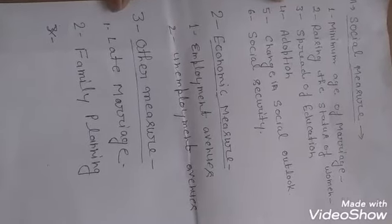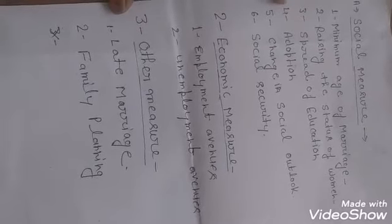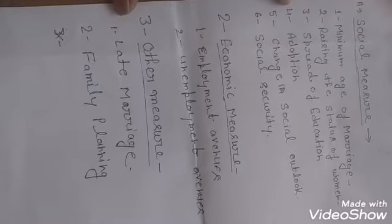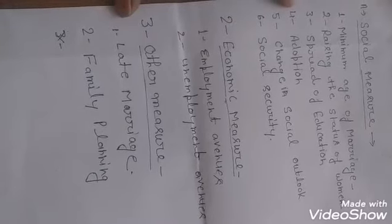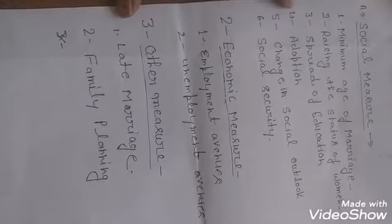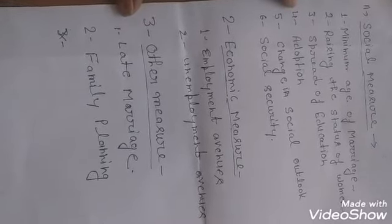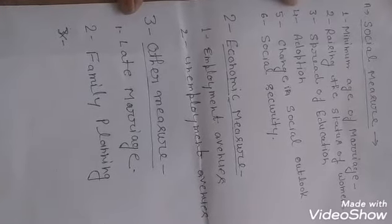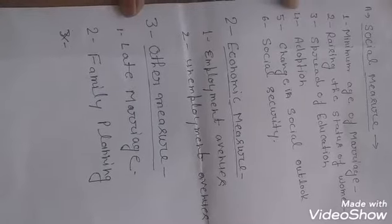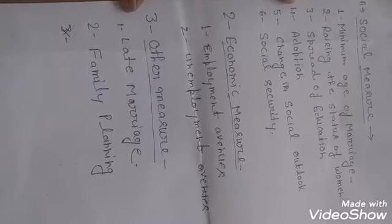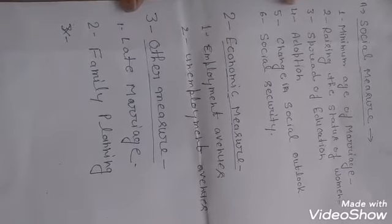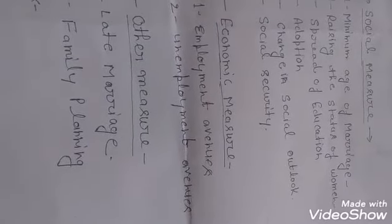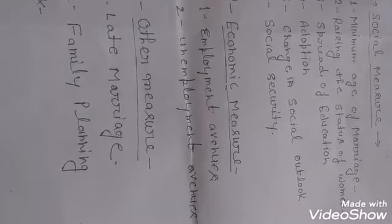In our society, many people's marriage age is as young as 12 to 16 years. If we raise the minimum age of marriage in our society, then we can control population explosion. The next method is raising the status of women.